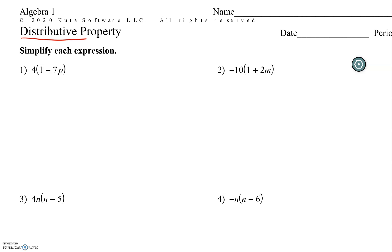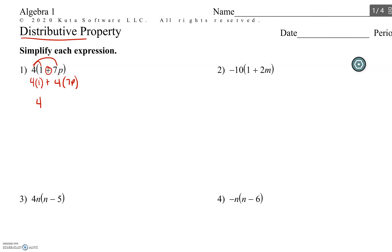I'm going to expand it out — you do not have to expand it out, I just want you to see what we're doing. So we're going to take 4 times 1 plus 4 times 7p, then multiply and simplify. 4 times 1 is 4, plus 4 times 7 would be 28p. And 4 and 28p are not like terms, so that's as far as we can go.